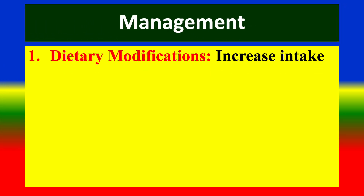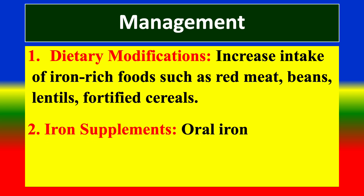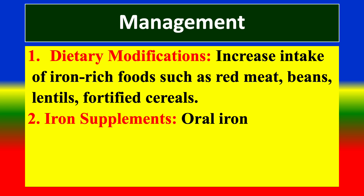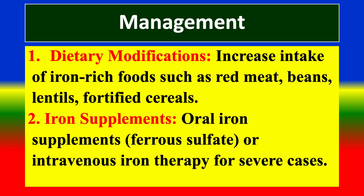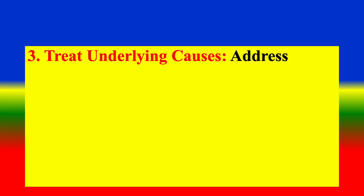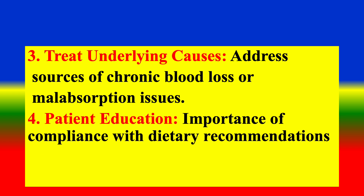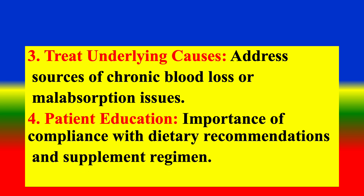Management includes: first, dietary modification to increase intake of iron-rich foods such as red meat and beans; second, iron supplements including oral iron supplements or intravenous iron therapy for severe cases; third, treating underlying causes by addressing sources of chronic blood loss or malabsorption issues; and fourth, patient education on the importance of compliance with dietary recommendations and supplement regimens.